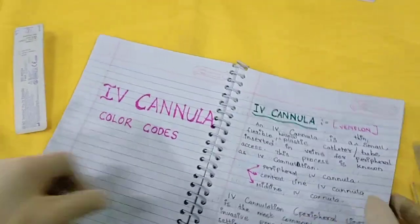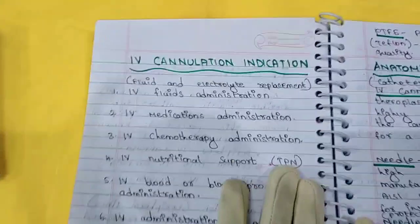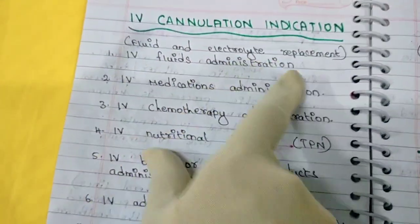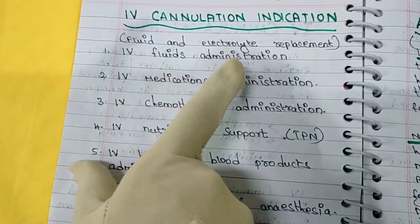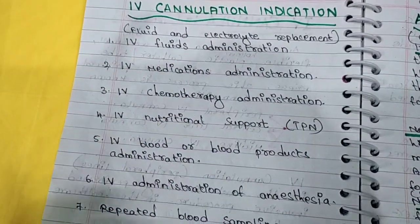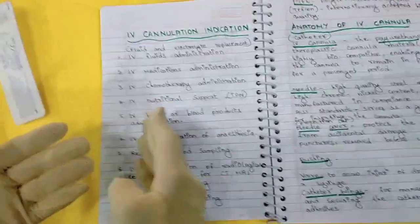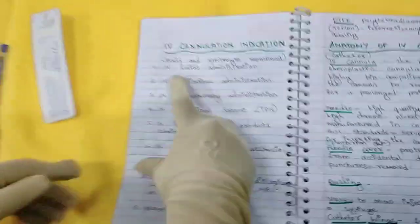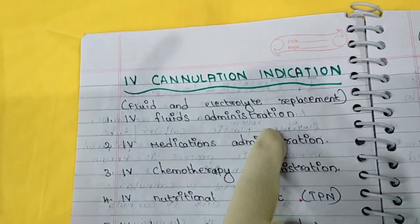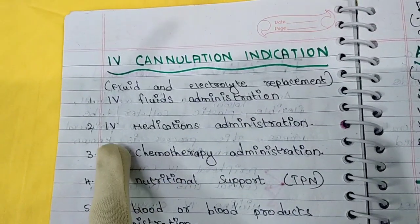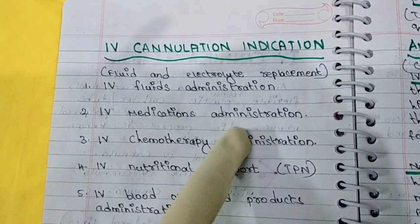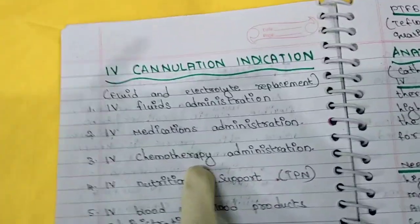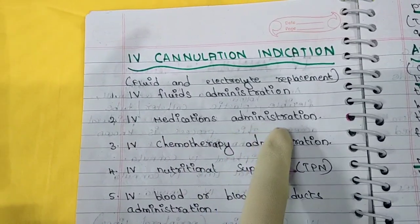Coming to the indications of IV cannulation — what it is used for. The first indication is for IV fluids administration, for fluid and electrolyte replacement. We can administer NS, RL, D5, DNS, D10, D25, and other different kinds of IV fluids. Then next is for IV medication administration — we can administer pain medication, medications for fever. It provides easy access for IV administration of medications.